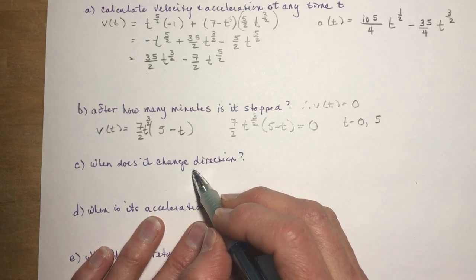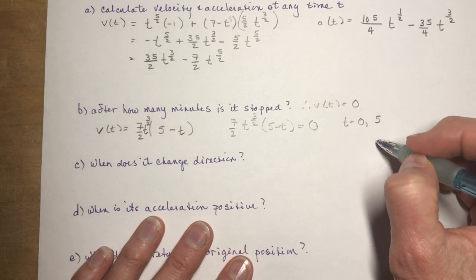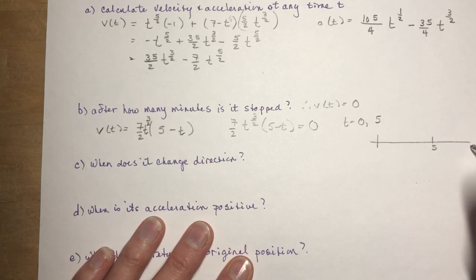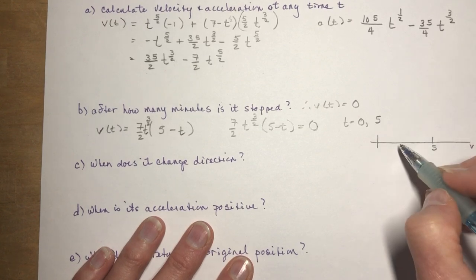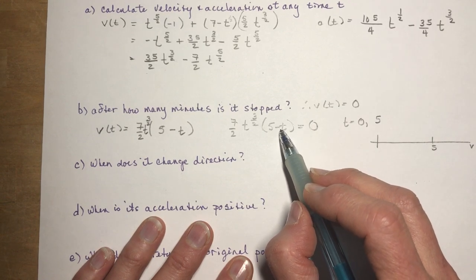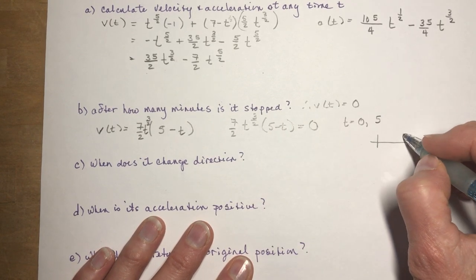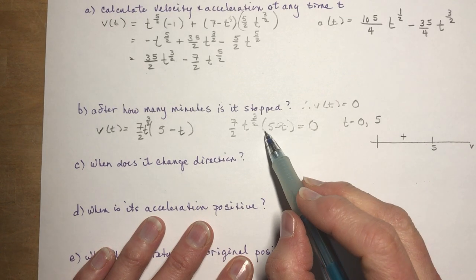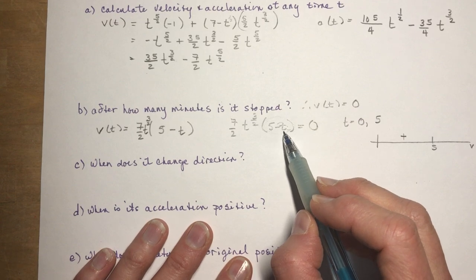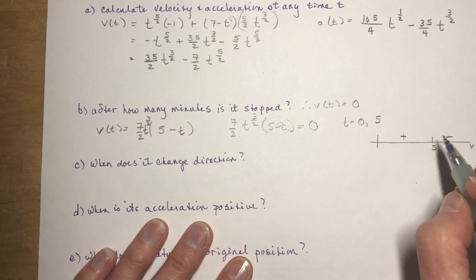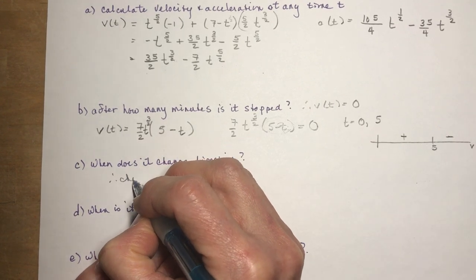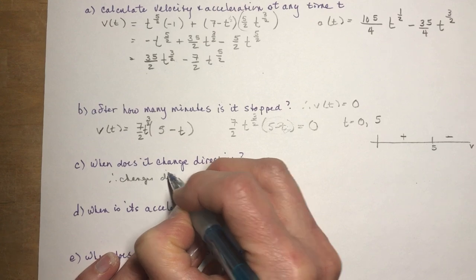When does it change direction? These zeros are potential places for a direction change. Using a number line with 5 marked, I check the velocity between 0 and 5 — plugging in t=3, everything is positive. Past t=5, the factor (5 minus t) becomes negative, so if I plug in t=6, I get a negative value. Therefore it changes direction at t=5 seconds.